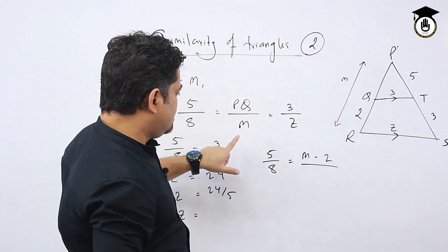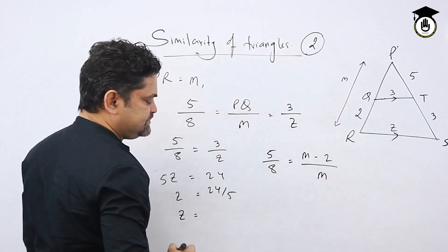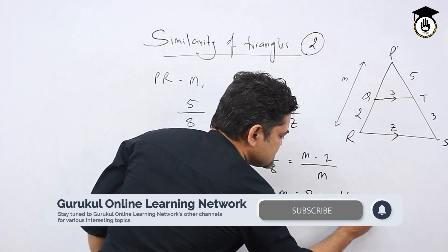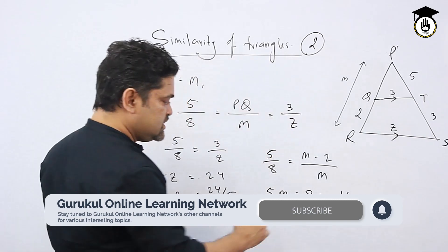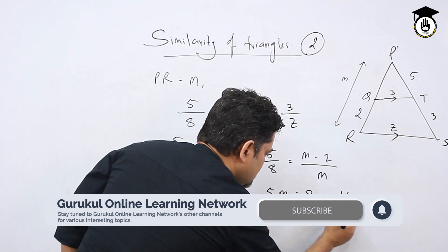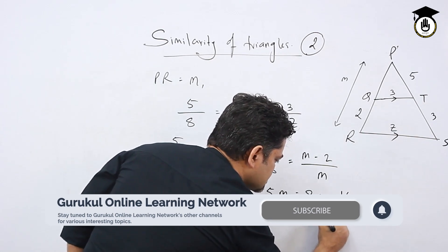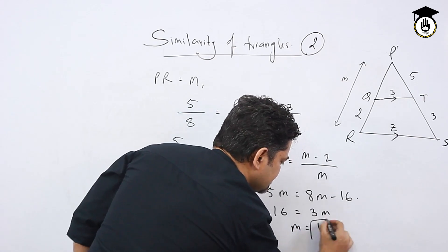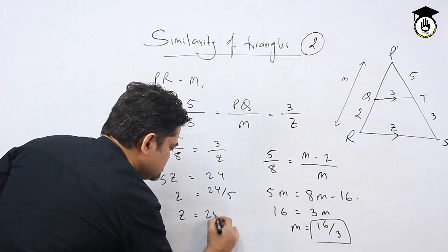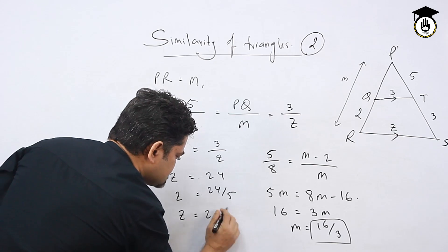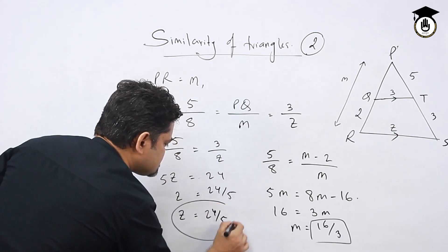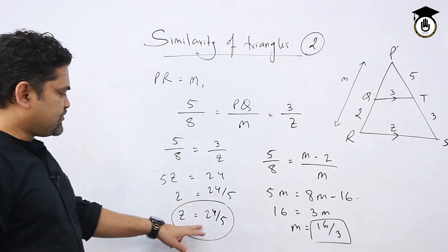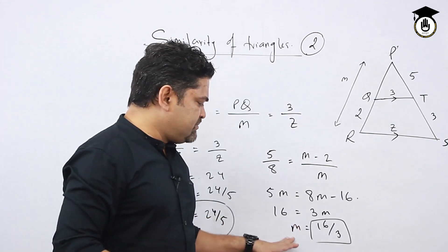Cross multiplying: 5M equals 8(M minus 2), which gives 5M equals 8M minus 16, so 3M equals 16, and M equals 16 by 3. So the answers are: Z equals 24 by 5 and M equals 16 by 3. I've now shown you two or three problems on similar triangles.